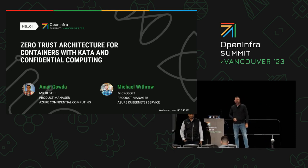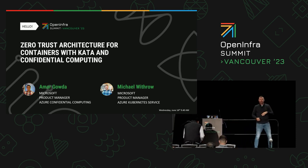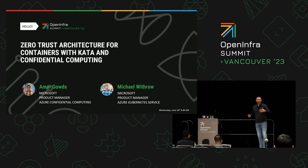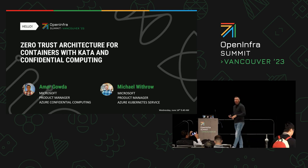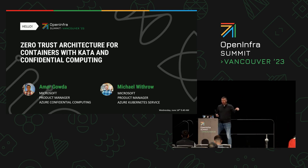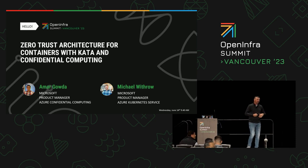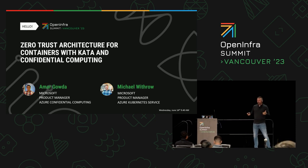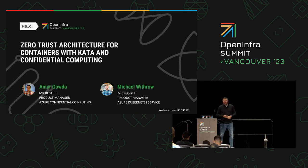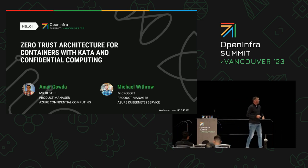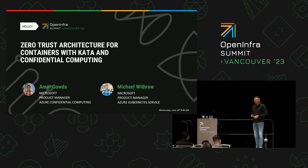Nice to see you all. As I said yesterday in the keynote, he and I are working together to bring confidential computing capabilities into Azure Kubernetes Service. Yesterday we gave a quick insight into it, and the purpose of this session is to go a lot deeper into exactly how we did it and how you can use it from a capabilities point of view. This is zero-trust architecture for containers with CATA and confidential computing.